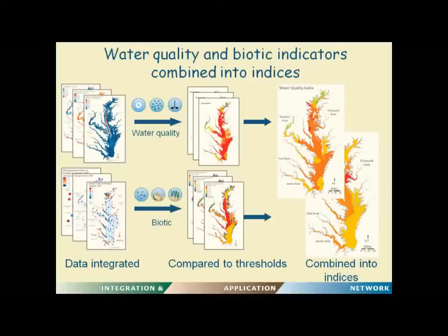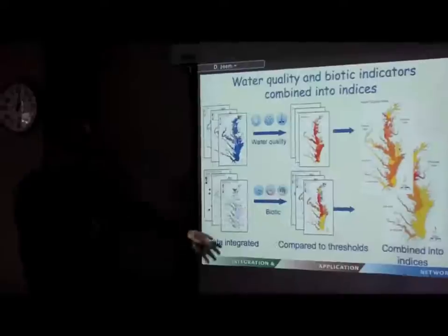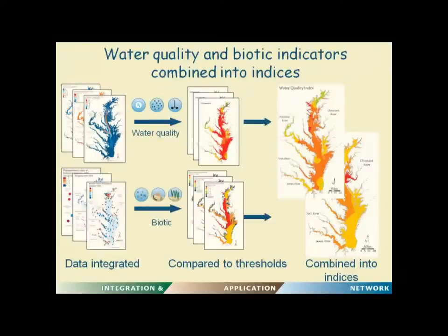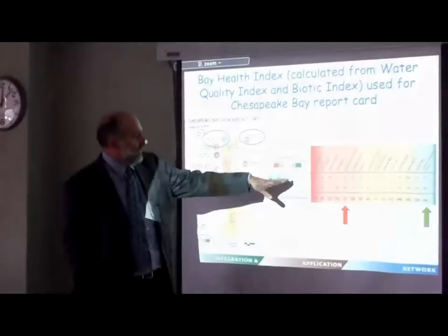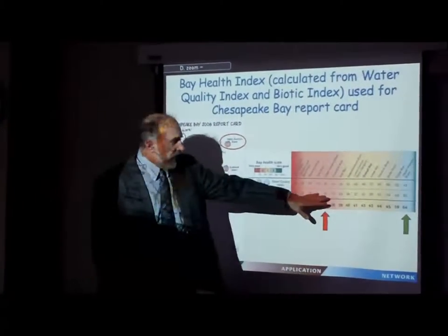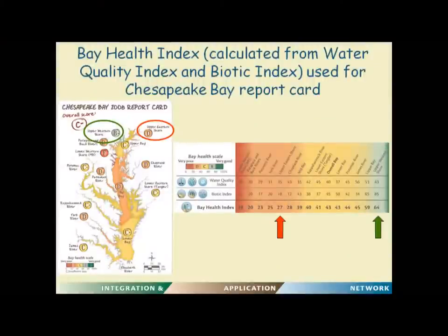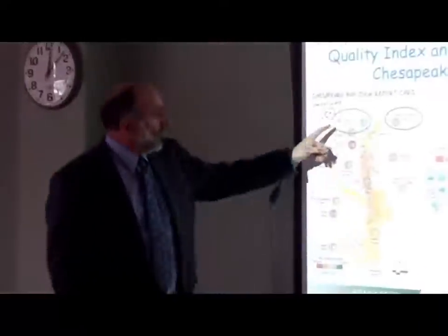Graphically, it looks something like this. We get maps of data collected monthly from 160-some sites around the Bay from the three water quality parameters, then mapping for grasses using aerial photography and ground truthing, and a separate set of sampling exercises for the benthic and phytoplankton. We combine this into threshold comparisons and generate combined indices. From those indices we generate a report card ranking using a numerical 1-to-100 scale for water quality and biotic index, average those, plot them on a Bay-wide map, and assign a letter grade based on a grading scheme with 20-point windows for each letter grade.